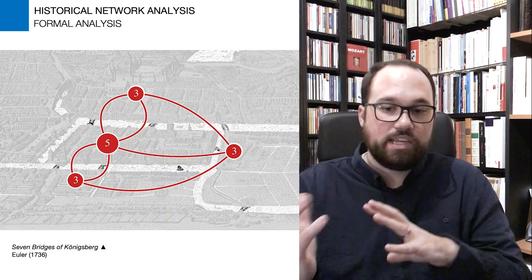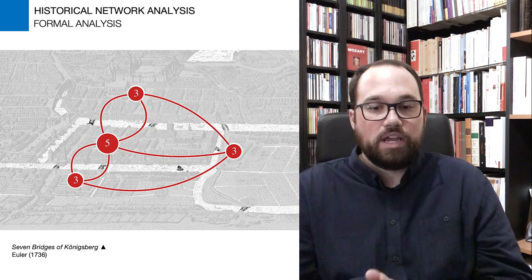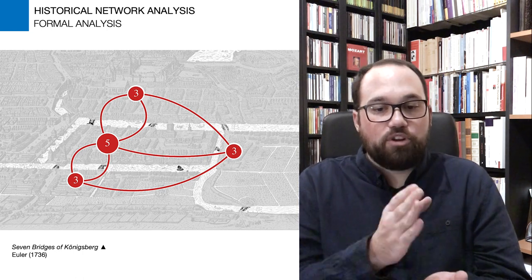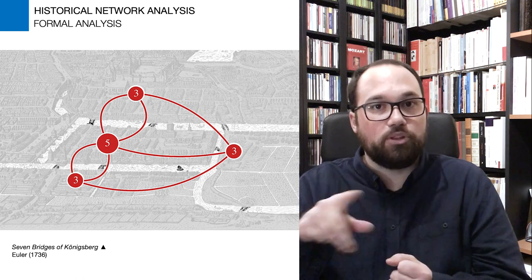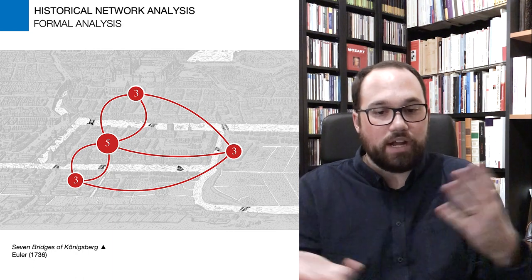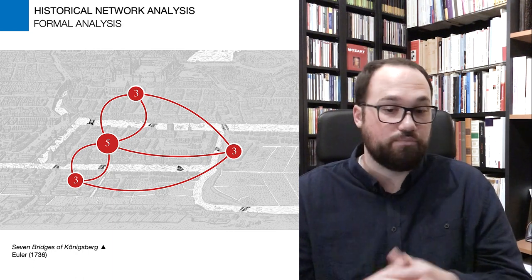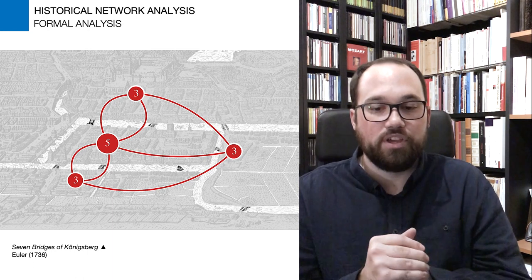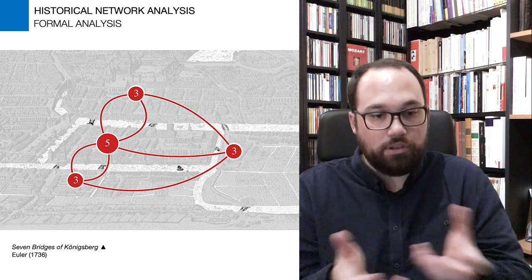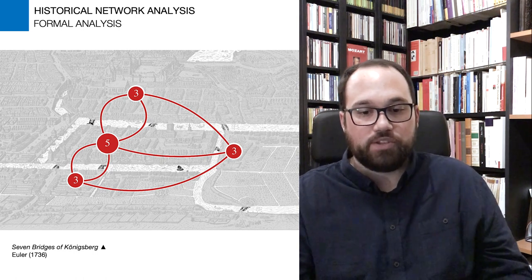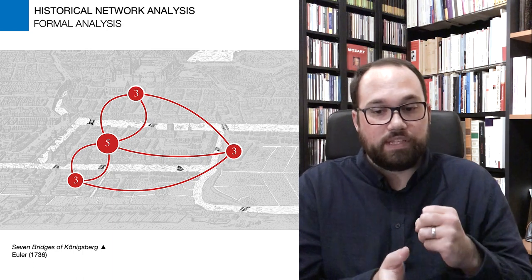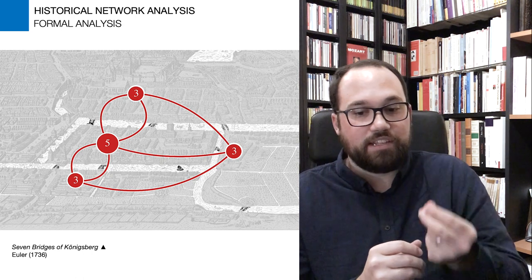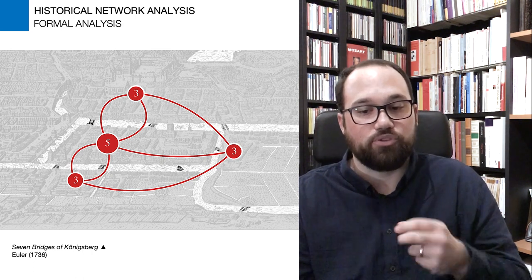Euler observed that, except at the endpoints of the walk, whenever one enters a vertex by a bridge, one leaves the vertex by a bridge. So the number of bridges touching every area must be even if you want to pass through it. In Königsberg, all the vertices have an odd number of bridges connecting them — five, three, three, three — so there is no possible path. This demonstration is very interesting because it consists in counting connections, which is exactly the foundation of graph theory.